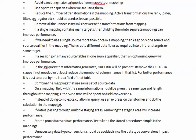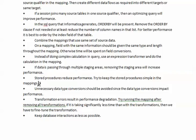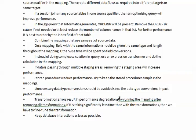If data is processed through multiple staging areas, removing unnecessary staging areas will increase performance. Stored procedures can reduce performance, so try to keep procedures simple in the mapping, or use the stored procedure in the pre or post SQL. Unnecessary data type conversion should be avoided since it impacts performance. Transformation errors result in performance degradation. Try running the mapping after removing all transformations — if it takes significantly less time, then we need to fine-tune those transformations. Keep database interaction to a minimum.